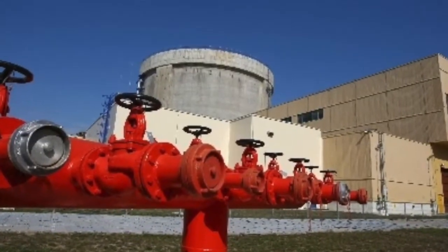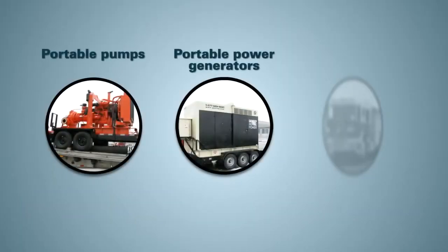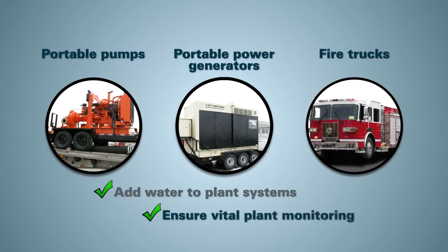Emergency mitigation equipment includes portable pumps, portable power generators, and fire trucks. These can be used to add water directly into the plant's systems and ensure vital monitoring equipment is available.